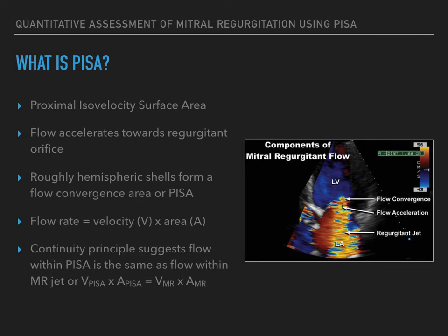Flow velocity is greatest at the narrowest point of the orifice, known as the vena contracta. Secondly, the conservation of mass, or continuity principle. In the absence of an extracardiac leak or intracardiac shunting, the volumetric movement of blood per unit time, known as flow rate, is constant throughout the heart. The flow rate is expressed as the velocity of blood movement multiplied by the area of the orifice or conduit it is travelling through. Thus, if the area through which blood travels decreases, such as in regurgitant or stenotic lesions, blood velocity will increase.